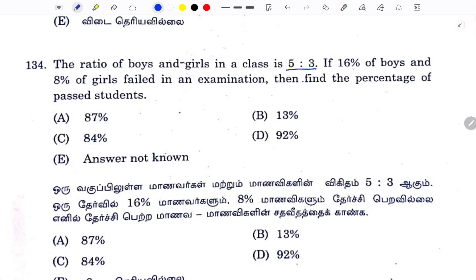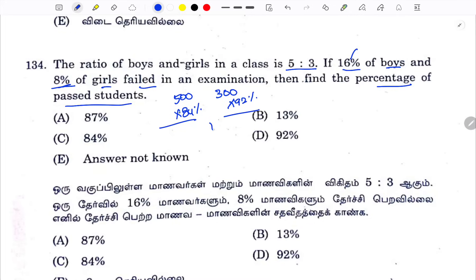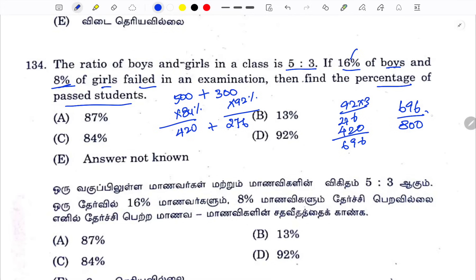The ratio of boys and girls is 5 to 3. 16% of the boys and 8% of the girls fail. Default values: boys = 500, girls = 300. Boys: 16% fail, so 84% pass. Girls: 8% fail, so 92% pass. 84 × 5 = 420. 92 × 3 = 276. Total pass = 420 + 276 = 696 students out of 800. Cancelling, 87% of students pass.